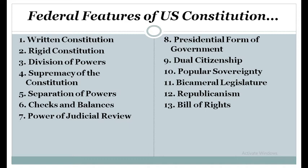Ten, there is also popular sovereignty in the United States, meaning the power or sovereign authority is derived from the people. The government is elected by the people, who in return are responsible to them. The people elect representatives, these representatives form the government, and the government is responsible to the people — it is more or less the same as democracy. Eleven, there is a bicameral legislature. In other words, the legislative branch will have two houses. In the United States, the Congress has two houses: the House of Representatives and the Senate. It is the same with India, which has the Lok Sabha and Rajya Sabha as part of parliament.